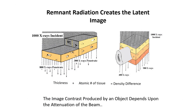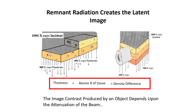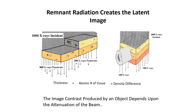Remnant radiation, or the data collected on the image receptor, allows us to create our images. The data collected is referred to as the latent image. It is a reflection of the thickness, atomic number of tissues, and their density differences. The contrast produced by an object depends upon the attenuation of the beam and the tissue the beam has interacted with.